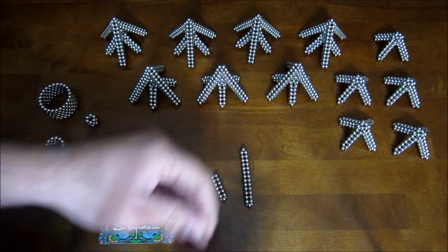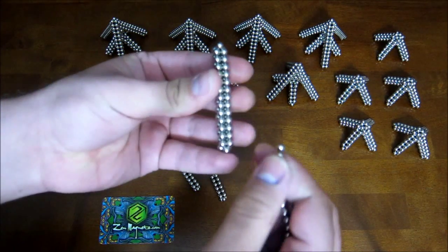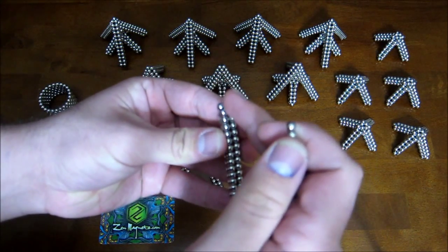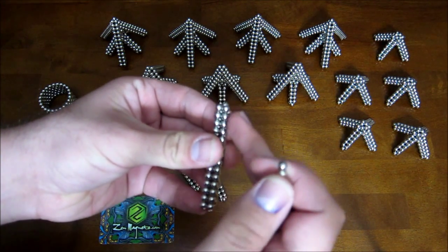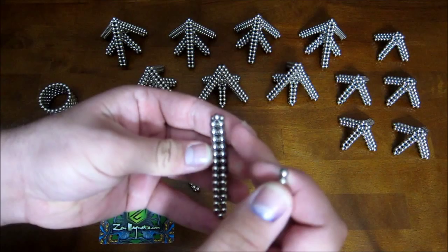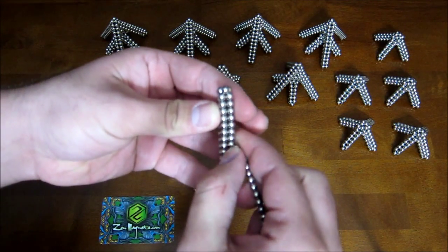For the long one, you take a chain and on the side with the point, not the side that ends with just kind of square, but the side that ends in a point, you want to remove the middle two magnets.